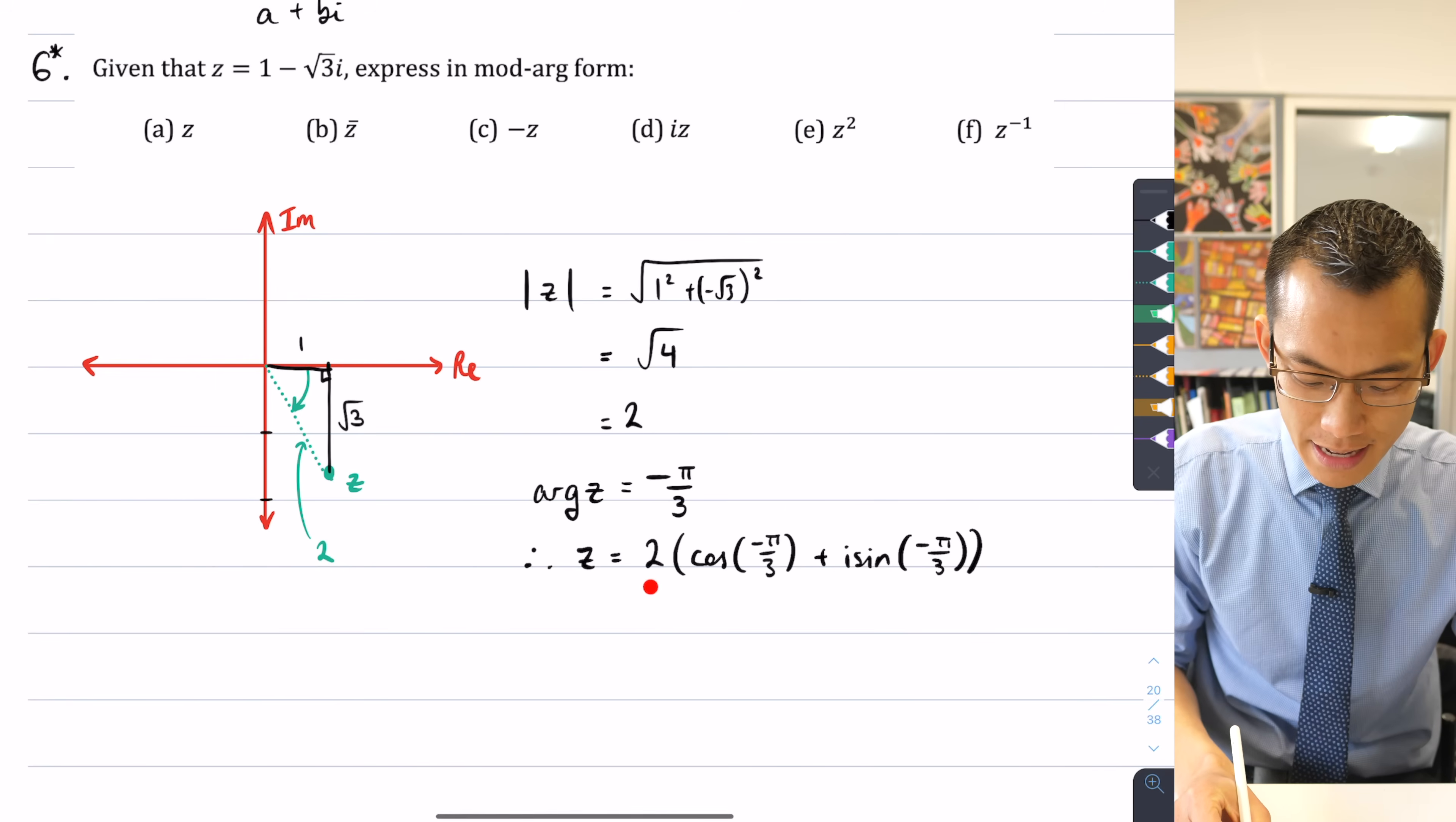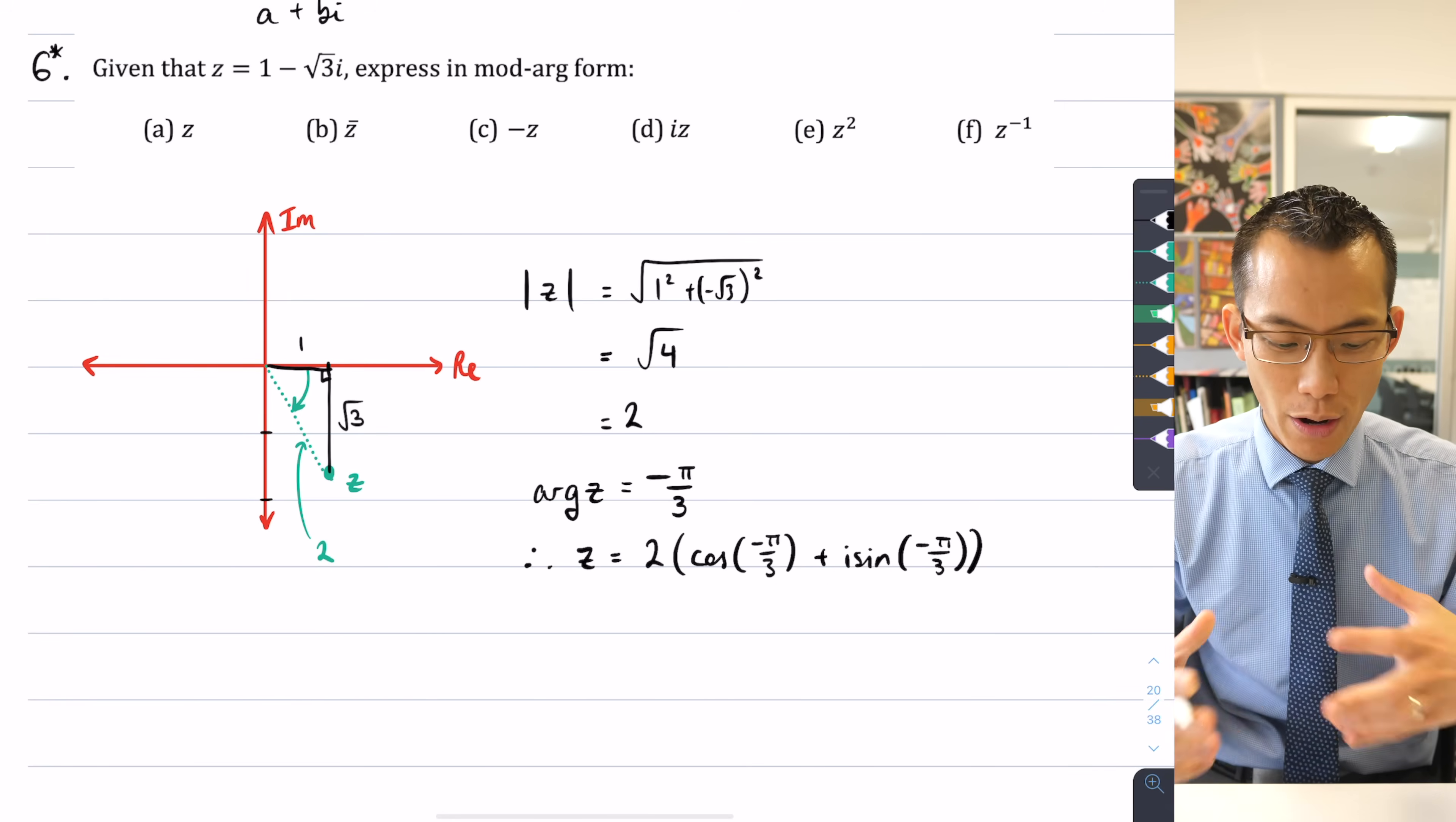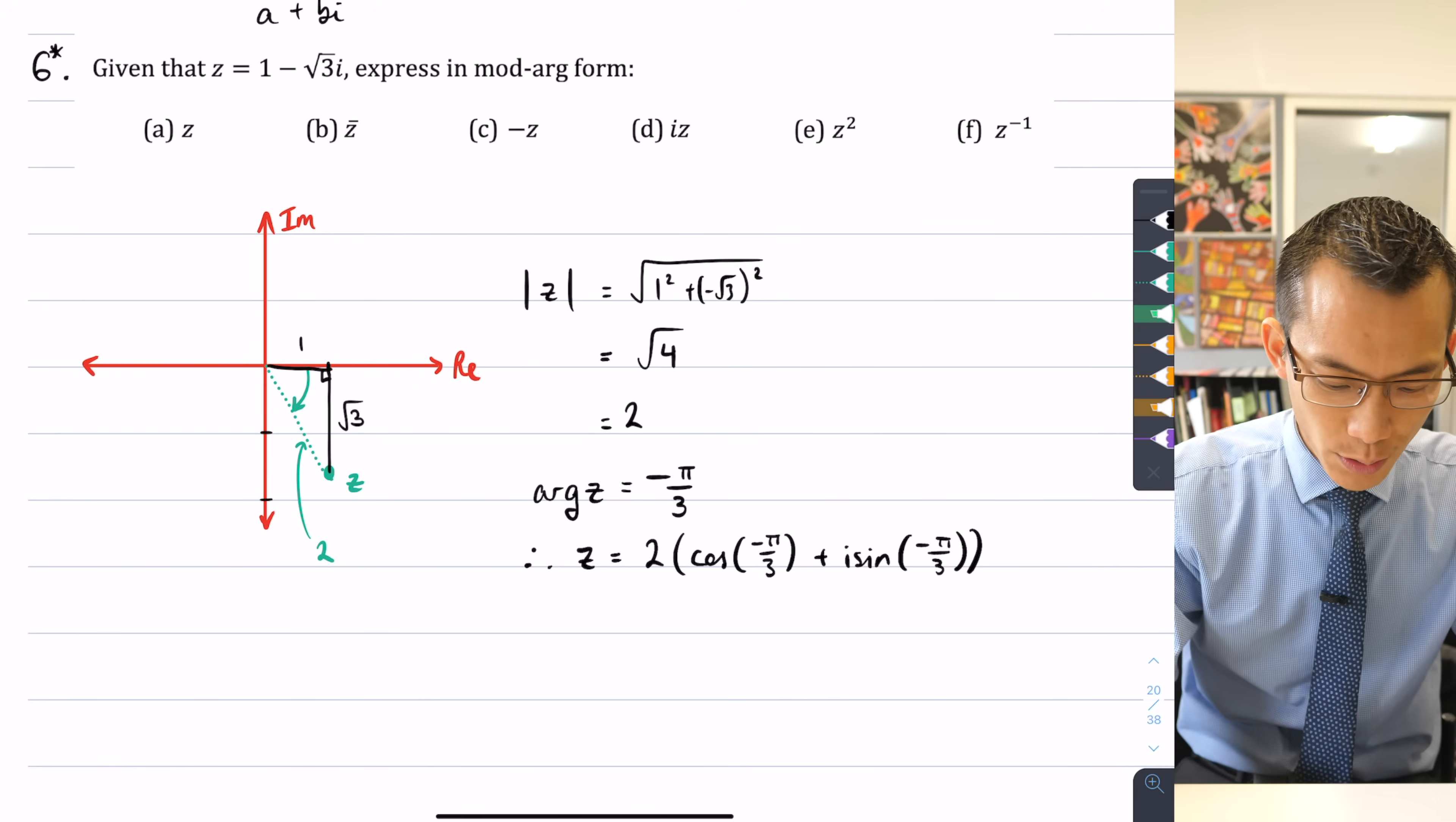That right there, that is z in mod arg form and I'm going to use that as the basis for trying to work out all the rest of my numbers. So let's now have a look. That was part A. Let's have a look at part B.